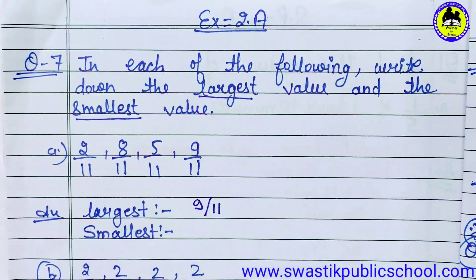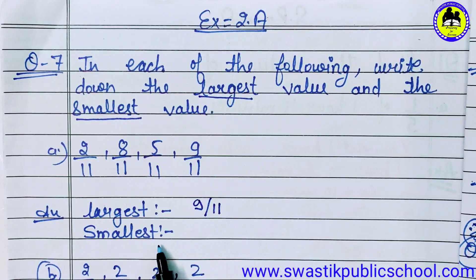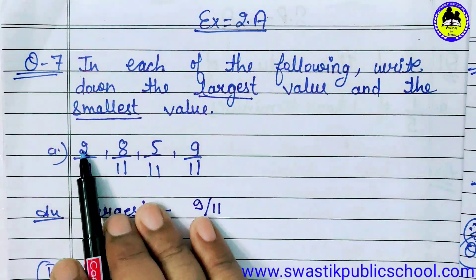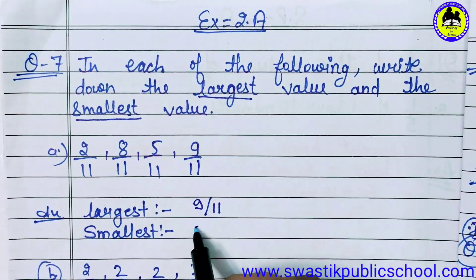11 — what will be our largest value? And similarly we will write smallest value. So smallest value will be 2 upon 11. Okay, 2 upon 11 is the smallest value.